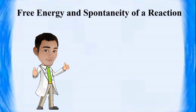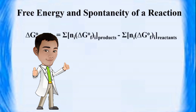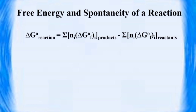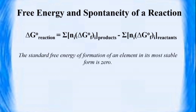Just like other thermodynamic functions, the free energy change for a reaction can be calculated. One way is by using standard free energies of formation with the summation formula: delta G equals summation of products minus summation of reactants. The standard free energy of formation of an element in its most stable form is zero.